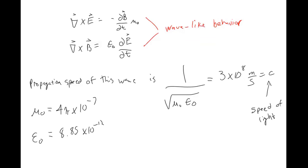Another thing to notice: the μ₀ and ε₀ — the zero denotes that it's a vacuum. So this 3 times 10 to the 8 is the speed of light in a vacuum, or basically outer space. If you are in a different medium like air or water, then the speed of light is different, and we'll see the implications of that a little bit later in the semester.